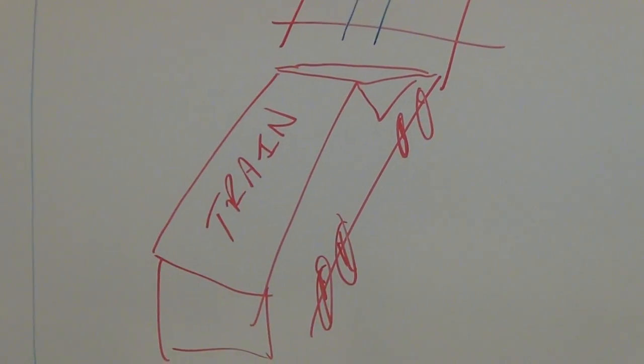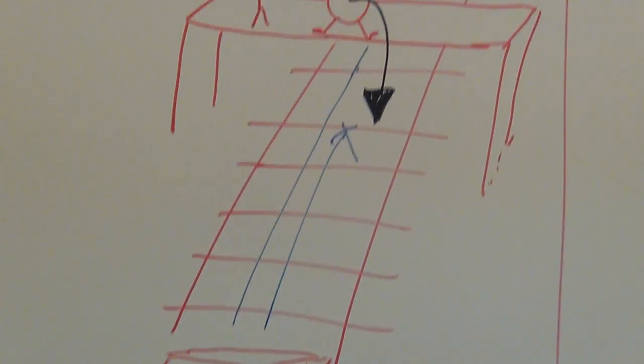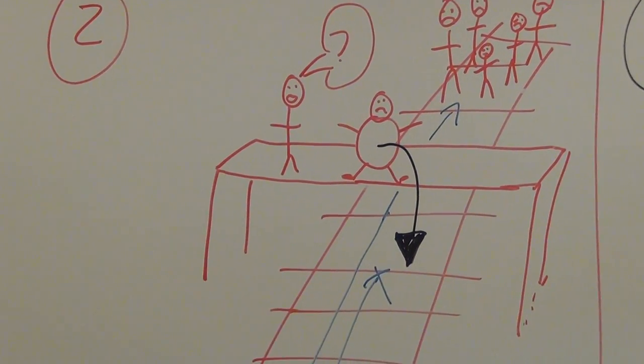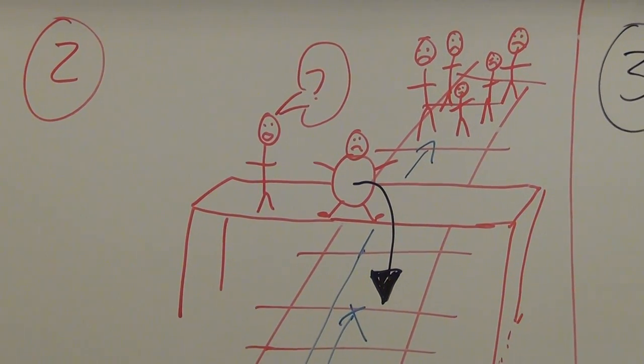So again, you can take an action to stop the train hitting five people and only hit one person. What do you do?